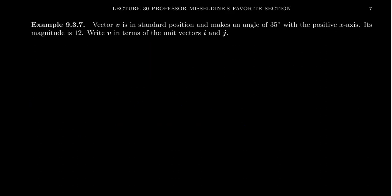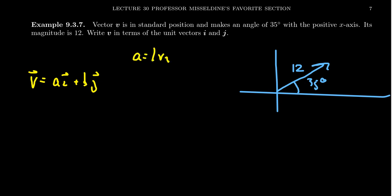So imagine we have a vector v, and in standard position, it's going to make an angle of 35 degrees with the positive x-axis. So we're already seeing a picture that looks something like the following. Our vector forms this angle of 35 degrees with the positive x-axis. Let's say its magnitude is 12. Can we write this in terms of the unit vectors i and j? Well, so we know that any vector can be written using unit vectors, so you're going to get ai plus bj. So we need to find these numbers, but a and b are just the horizontal and vertical components of the vector. So a is just the horizontal component, vx, which would just be the magnitude times the cosine of this angle theta. And so we end up with 12 times cosine of 35 degrees.